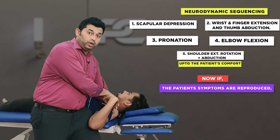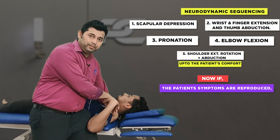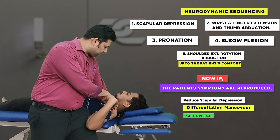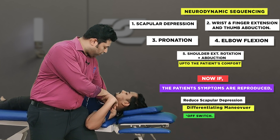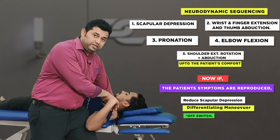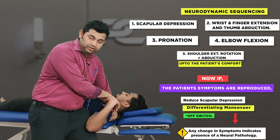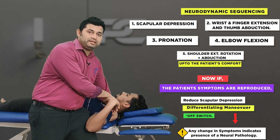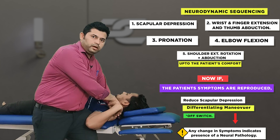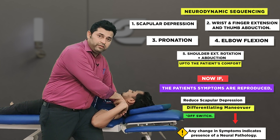At the onset of the first symptom, the therapist uses a differentiating maneuver to rule out the involvement of the nervous system. For this, the therapist reduces the amount of scapular depression movement. If this makes any change in the patient's symptoms, it indicates the presence of nervous system involvement.